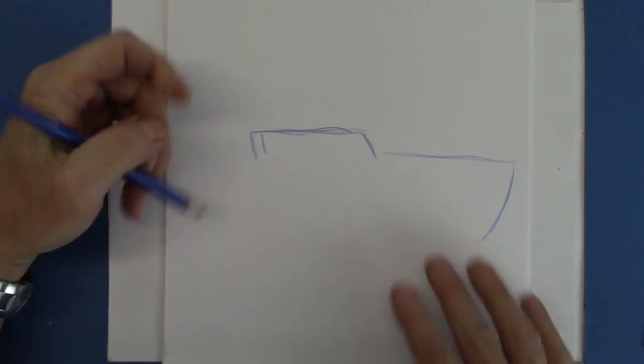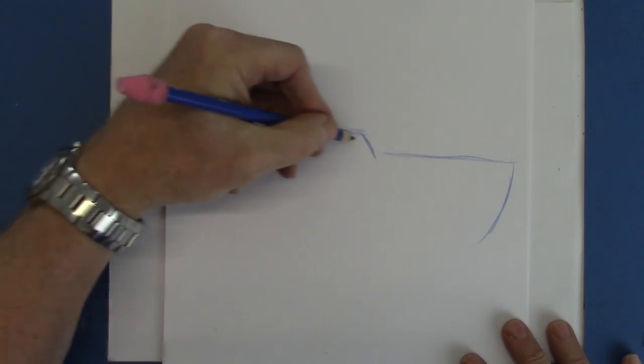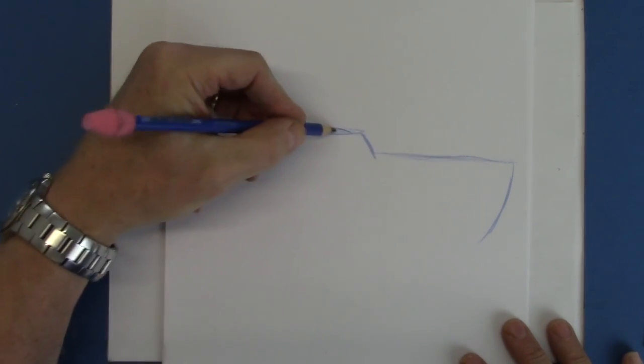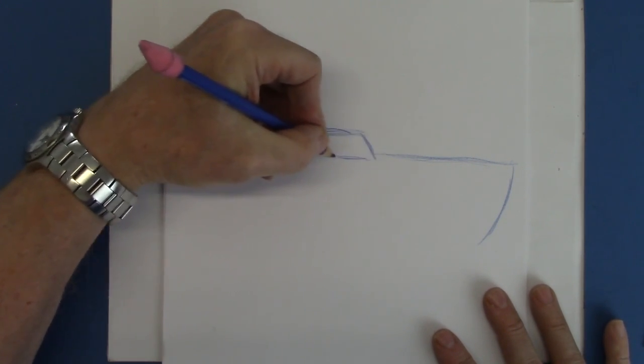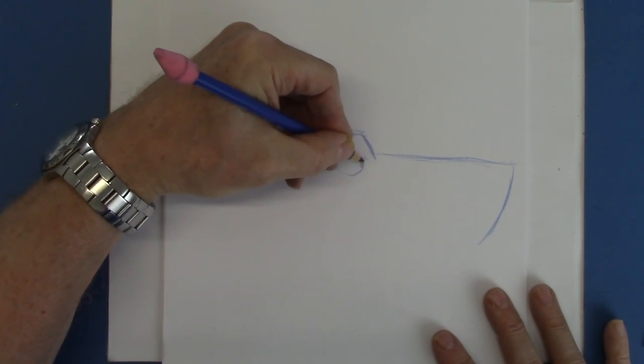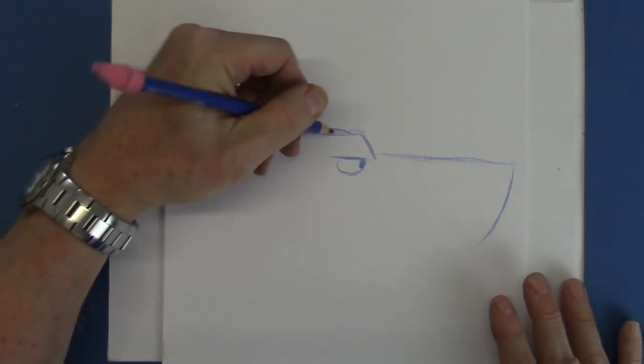Now let's start with this blue pencil and then we'll go over it in black. So how are we going to make this unique? Well, first of all, it's got a very flat forehead, as you can see, and I'm going to put the eye right here. So the eye is very close to the forehead and it's kind of small.